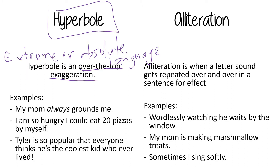If you're thinking about signposts, that extreme or absolute language is the same thing as hyperbole. It's when you're being dramatic or over-the-top and you're exaggerating. So let's look at a couple of examples. Down here I have: 'My mom always grounds me.' Your mom doesn't always ground you — you're not grounded every single day — but sometimes it might feel like that. So in this sentence somebody is exaggerating, using hyperbole to show how they feel.